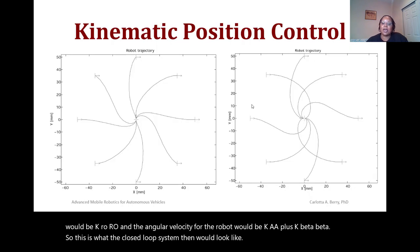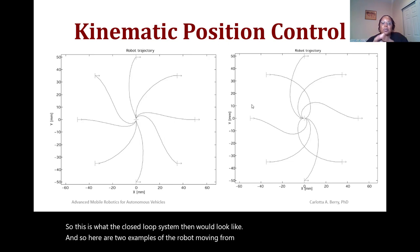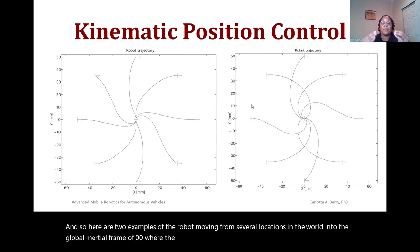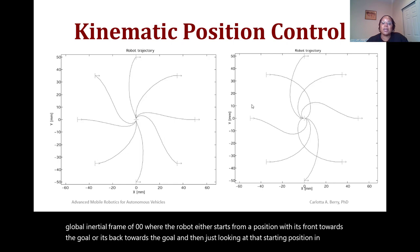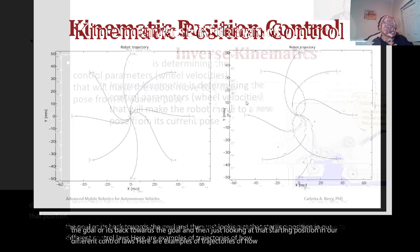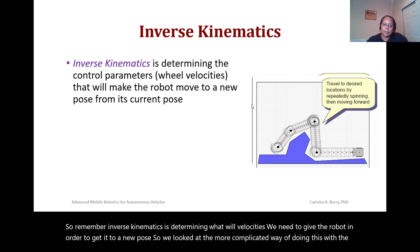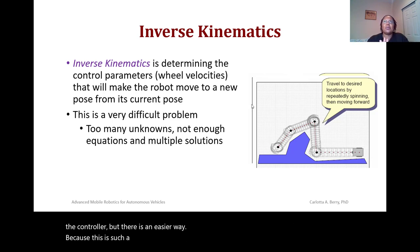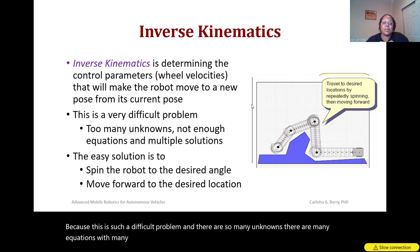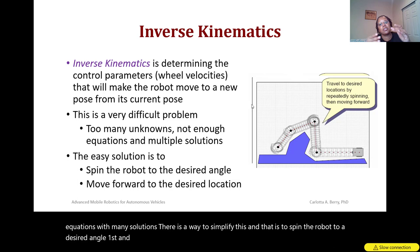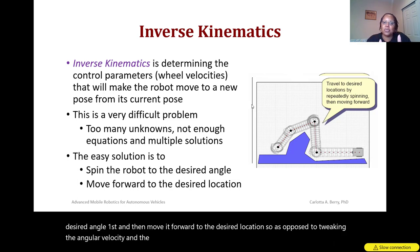This is what the closed loop system looks like. Here are two examples of the robot moving from several locations into the global inertial frame at zero-zero, where the robot starts either with its front toward the goal or its back toward the goal. These show example trajectories using the different control laws. Because inverse kinematics is such a difficult problem with many unknowns and many solutions, there is a simpler approach: spin the robot to a desired angle first, then move it forward to the desired location. This decouples angular and linear velocity rather than tweaking both simultaneously.